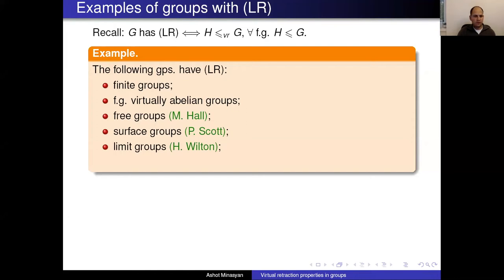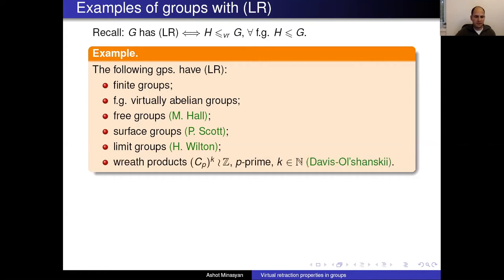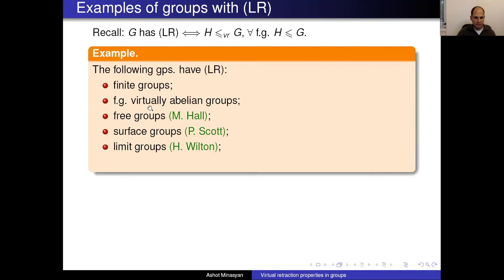Henry Wilton proved that limit groups — also called finitely generated fully residually free groups — have this property. Limit groups are a class studied in geometric group theory. Looking at these examples, they all have a sort of non-positively curved flavor.